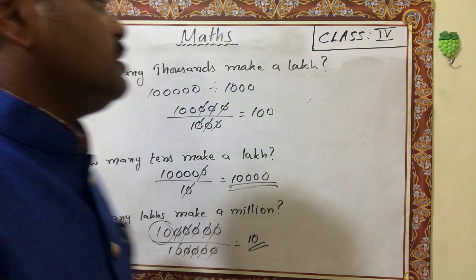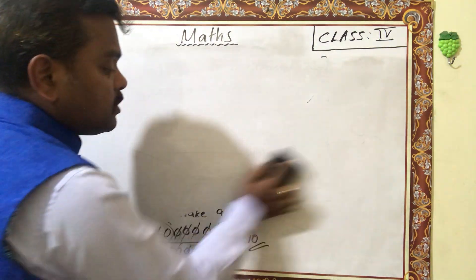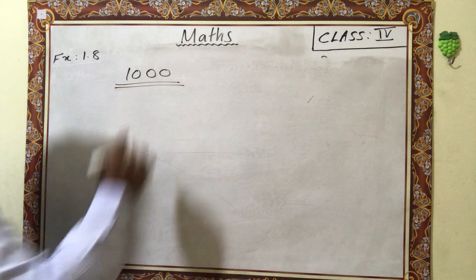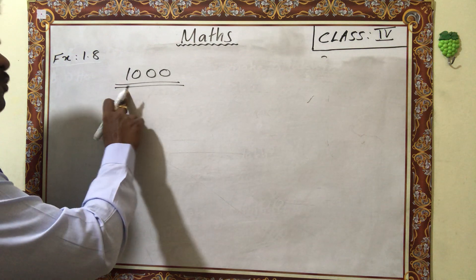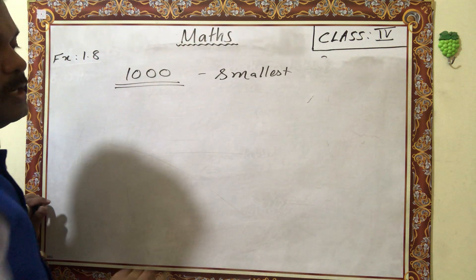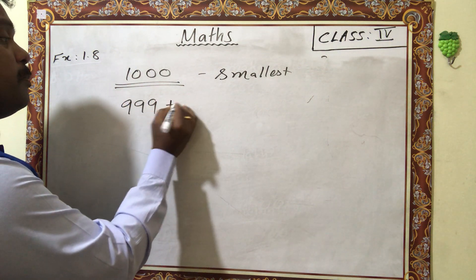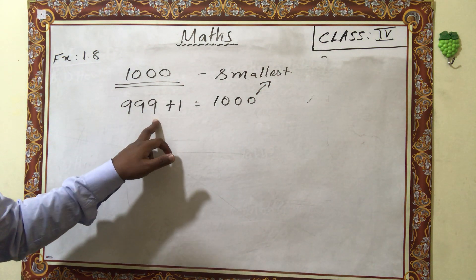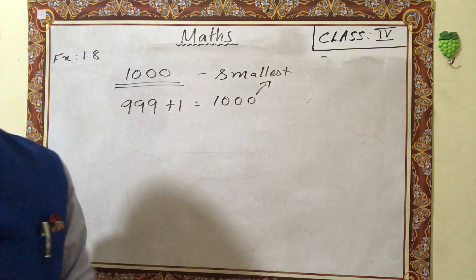The next question: write numbers one less than a given number. First, you know that one thousand is a four-digit number. This is the smallest four-digit number. The largest three-digit number plus one equals the smallest four-digit number.